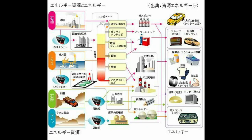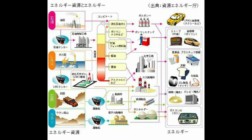説明しよう。エネルギーには大きく2種類。資源と概念。バイオマスや石油は資源。光や熱は概念。